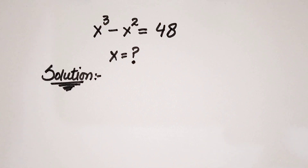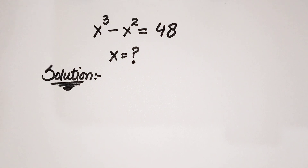Hello everyone, welcome back to Mini Max Club. Today we have a nice exponential question which is x cubed minus x squared is equal to 48. We have to find the value of x here.